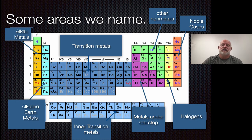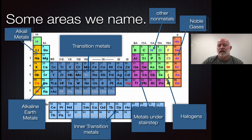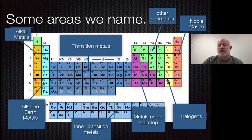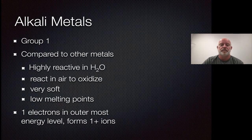Now we're going to hit these four groups in particular — the alkaline metals, the alkaline earth metals, the halogens, and the noble gases — in more detail. The rest of them we'll talk about as time goes on individually.